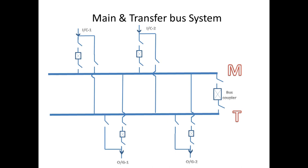The transfer bus is connected with the help of an isolator switch. This isolator switch is also called a bypass isolator. With the help of a circuit breaker and isolator switch, it is connected to the main bus.